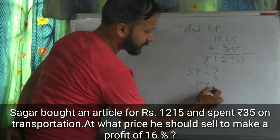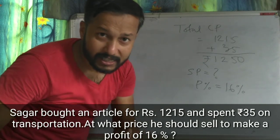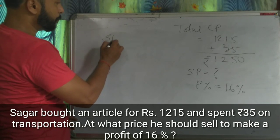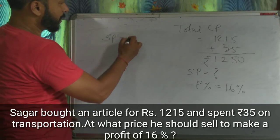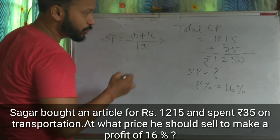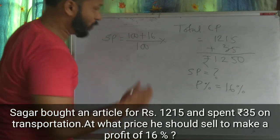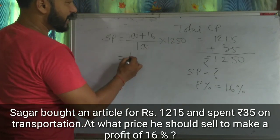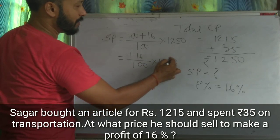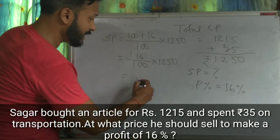We have to find SP. SP equals 100 plus profit percent by 100 into CP. That is 116 by 100 into 1250. Just calculate this and you will get the selling price.